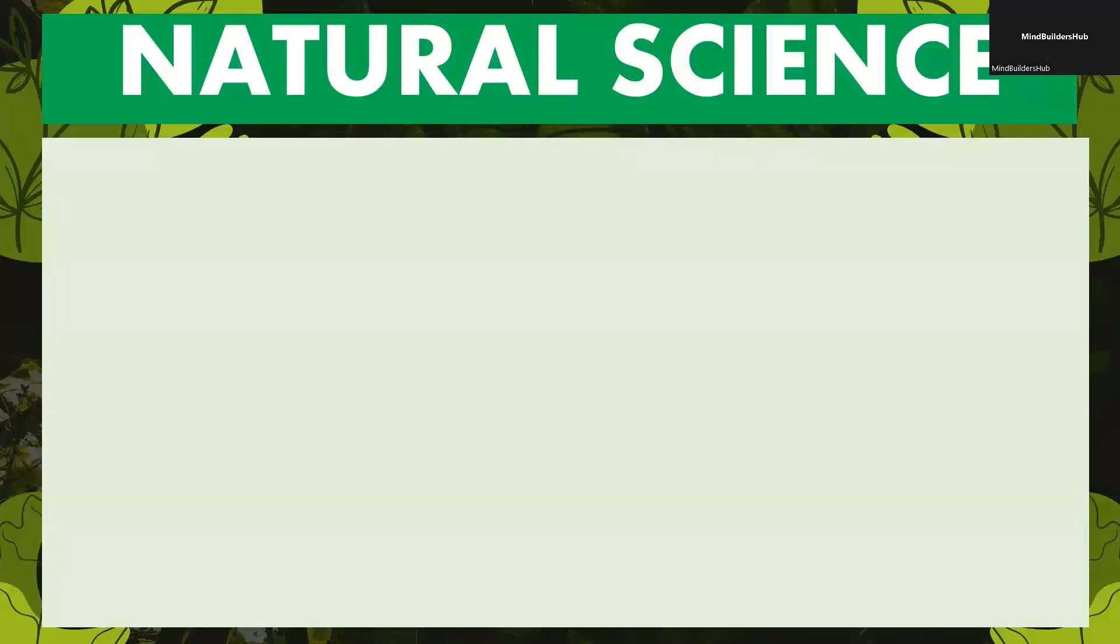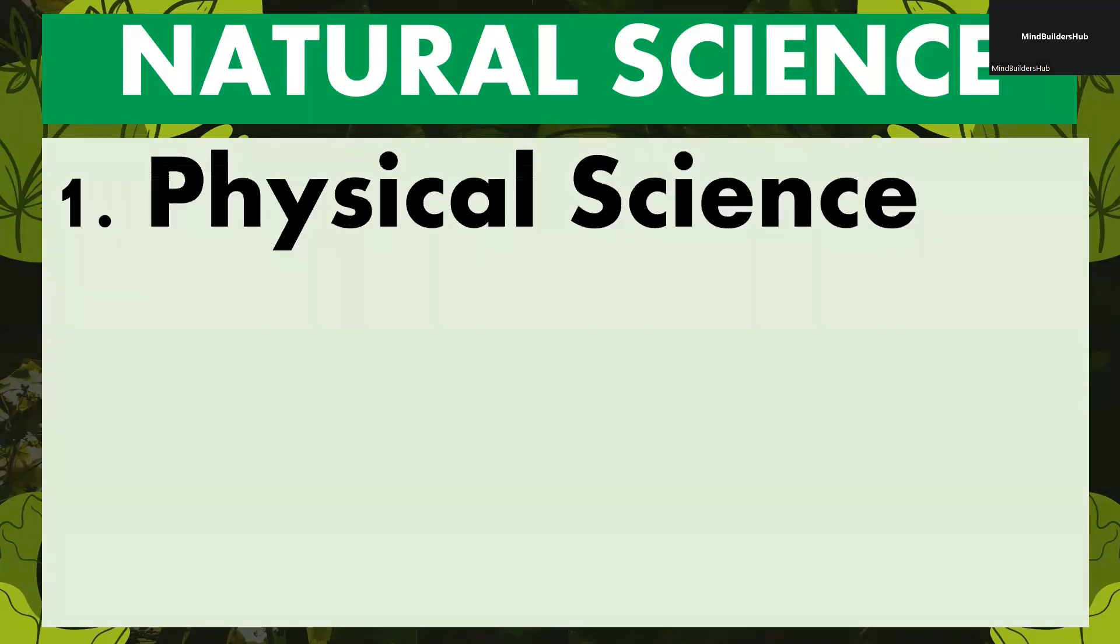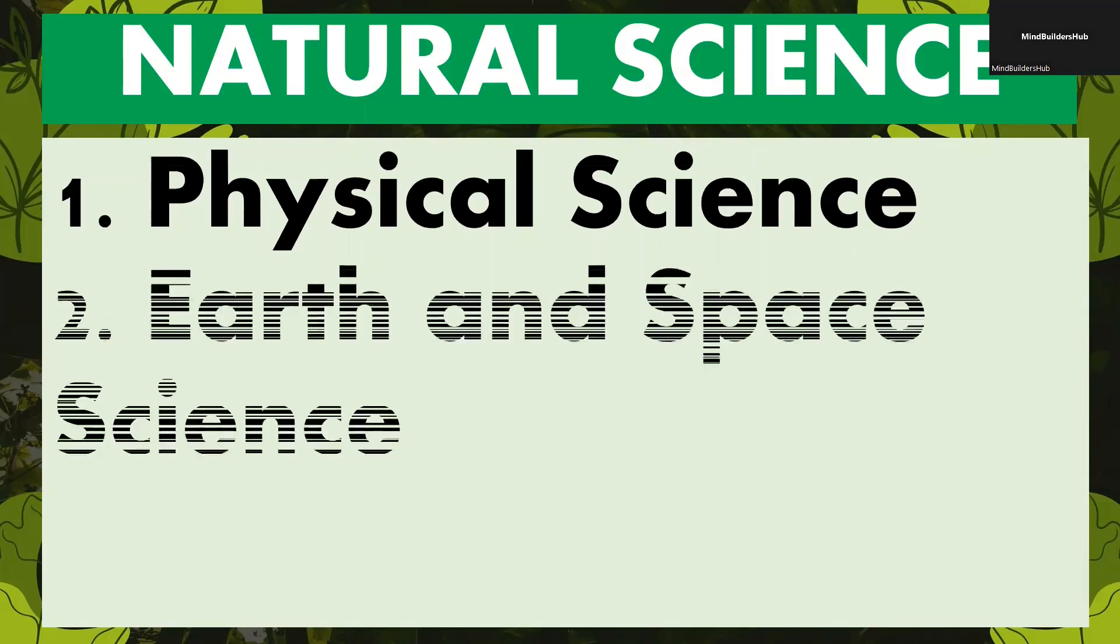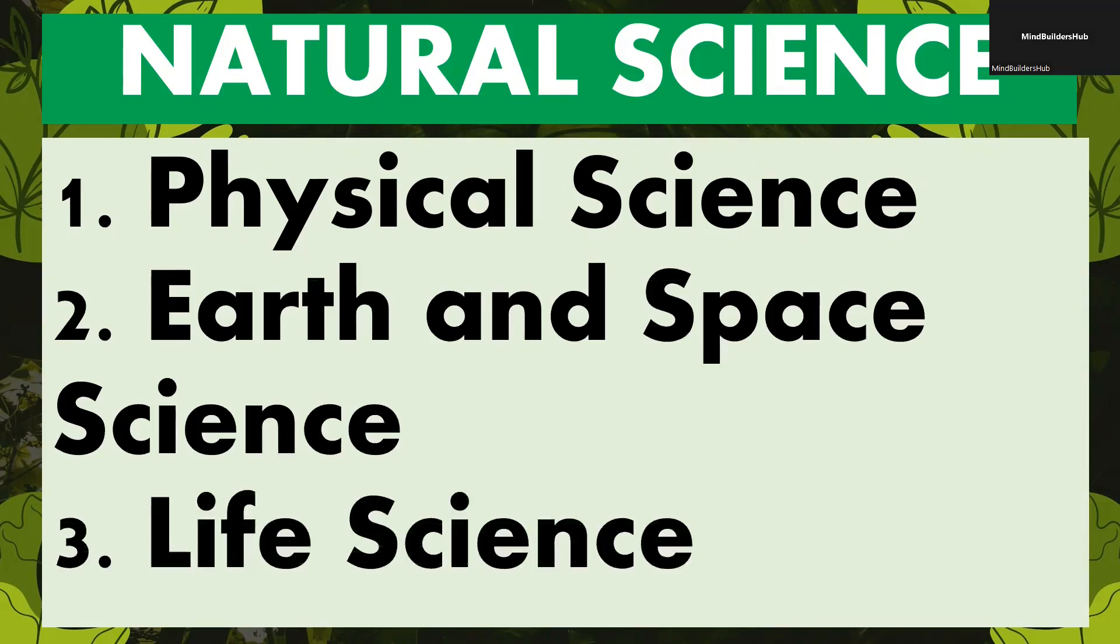So now, to review the natural science or the branches of science for today's video, remember that we have three major branches: the physical science, the earth and space science, and of course, life science.